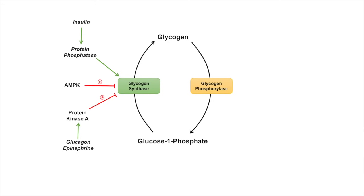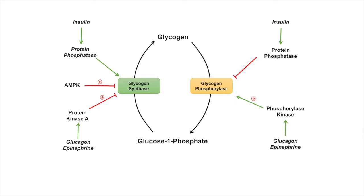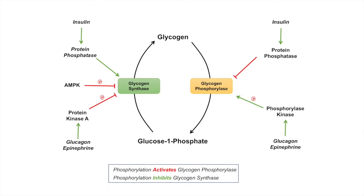The difference in regulation between glycogen synthase and glycogen phosphorylase is that insulin actually inhibits glycogen phosphorylase through a protein phosphatase. But it's the opposite with glucagon and epinephrine — they activate a phosphorylase kinase to phosphorylate and activate glycogen phosphorylase. So the important point is that phosphorylation activates glycogen phosphorylase, whereas phosphorylation inhibits glycogen synthase. An easy way to remember this: phosphorylation activates phosphorylase.